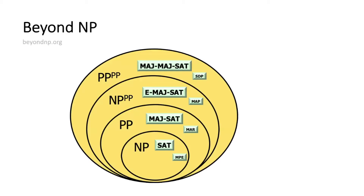We have these complexity classes with a rich set of interesting problems. We've looked at problems from probabilistic reasoning and machine learning that are complete for their classes, and the prototypical ones, which are all questions on Boolean formulas. Now I want to show you one of these reductions — specifically, how we can reduce MAR to weighted model counting, to show how the probabilistic and symbolic worlds get connected.